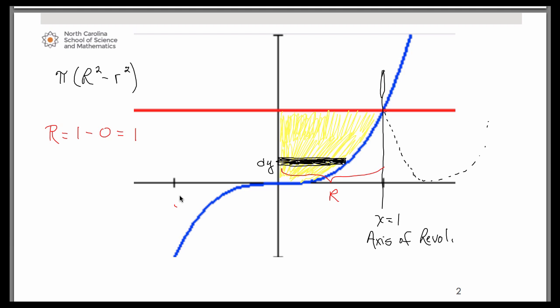Now for little r. Little r is the distance from the axis of revolution to the close side of the representative rectangle. So little r is going to be this little part in here. It's basically the radius of the hole. So once again, we're going to use this idea of right minus left. So on the right, little r is hitting the axis of revolution. On the left though, it's hitting the curve, which is x cubed.